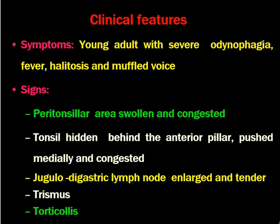If we can look at the peritonsillar area, it will be swollen and there will be congestion of the peritonsillar area. The tonsil shall be hidden behind the anterior pillar and pushed medially and congested. In this way you can differentiate acute tonsillitis from Quinsy. In acute tonsillitis, tonsils won't be hidden — they will be open and enlarged. But in the case of peritonsillar abscess, the tonsils will be hidden behind the anterior pillar.